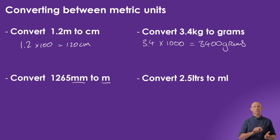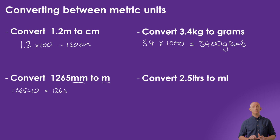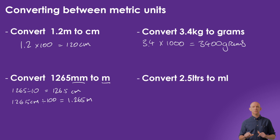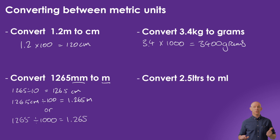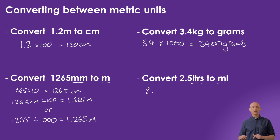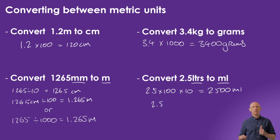To convert 1265 millimeters to meters, since it jumps two unit steps, we can first divide by 10 to get 126.5 centimeters, then divide by 100 to get 1.265 meters. Alternatively, divide directly by 1000, since 10 × 100 = 1000, also giving 1.265 meters. To convert 2.5 liters to milliliters, multiply by 100 to get 250 centiliters then by 10 to get 2500 milliliters, or multiply directly by 1000.